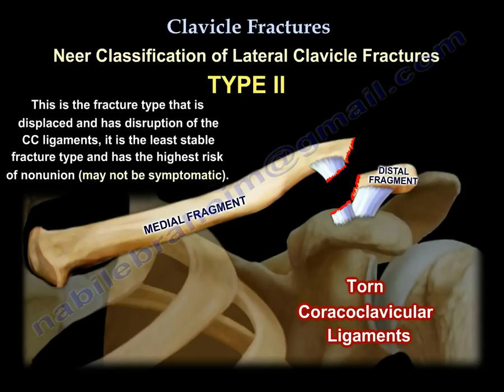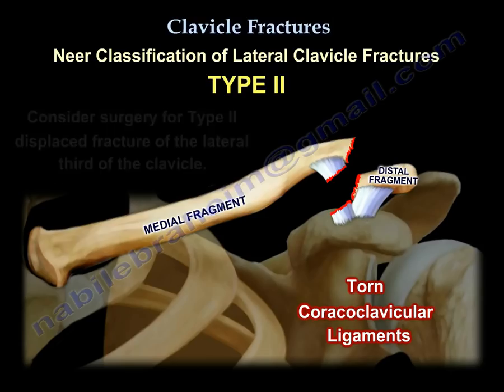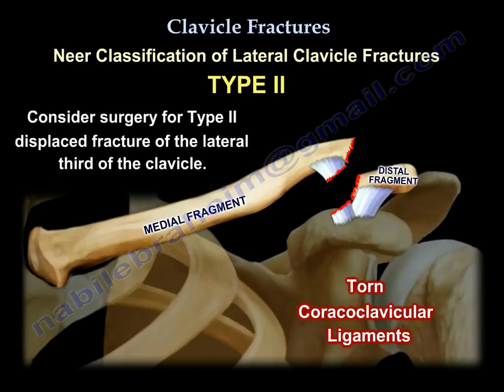Lateral clavicle fractures are a different breed. In a displaced Type 2 fracture, the CC ligament is detached from the proximal fragment. Type 2 is the least stable and has the highest risk of nonunion — up to 50 percent — although this nonunion may not be symptomatic. You must consider surgery for displaced Type 2 fractures of the lateral third of the clavicle.